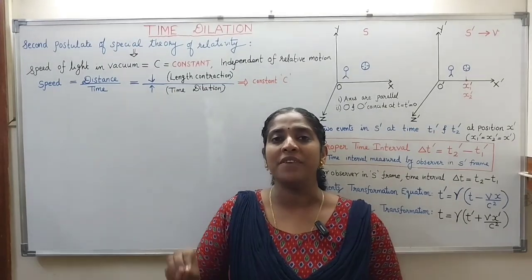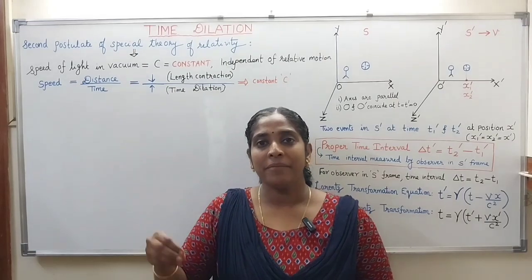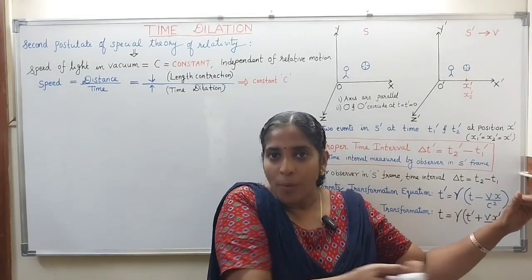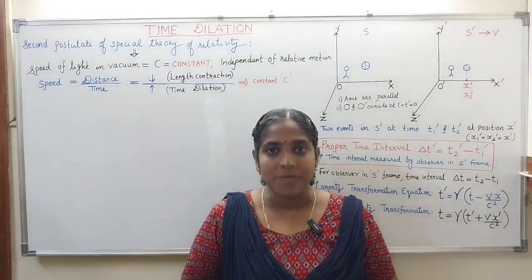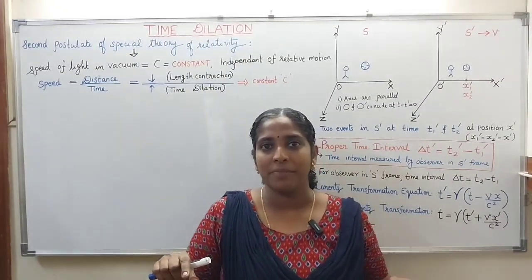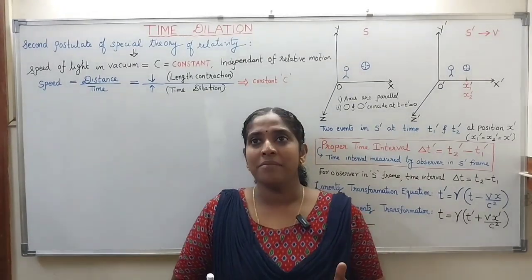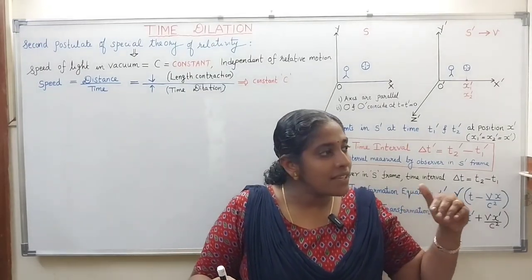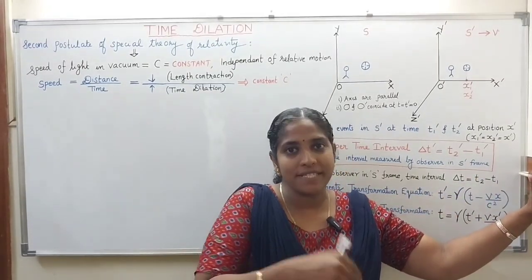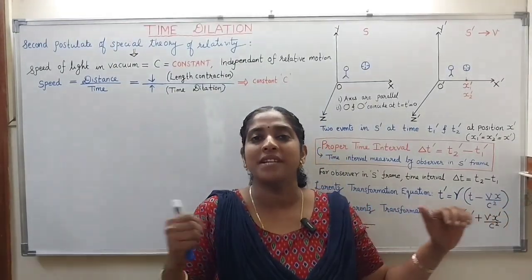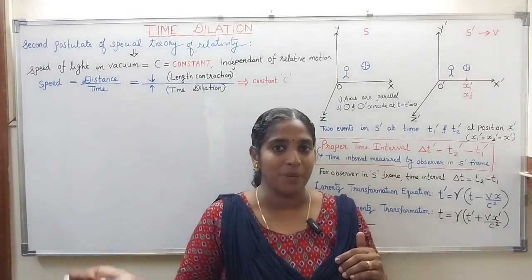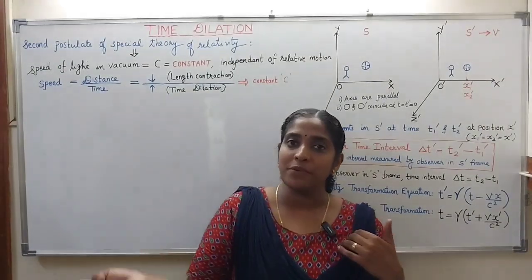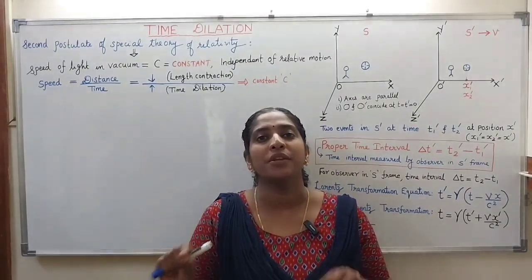In our daily life, we are not dealing with speeds approaching the speed of light. For example, if I am moving in a car at 30 km/h and another car is moving in the opposite direction at 60 km/h, the relative speed is 90 km/h. But at relativistic speeds, if I am in a spaceship moving at 0.6c and another is moving at 0.7c in the opposite direction, we cannot simply add them. With respect to either observer, the speed of light remains c — 3×10⁸ m/s only.